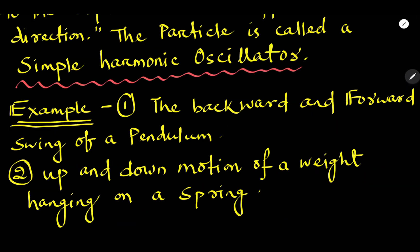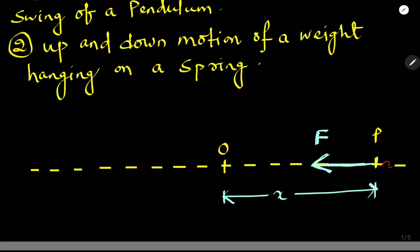Some examples of simple harmonic motion are: the back-and-forth swing of a pendulum, and the upward-and-downward motion of a weight hanging on a spring.